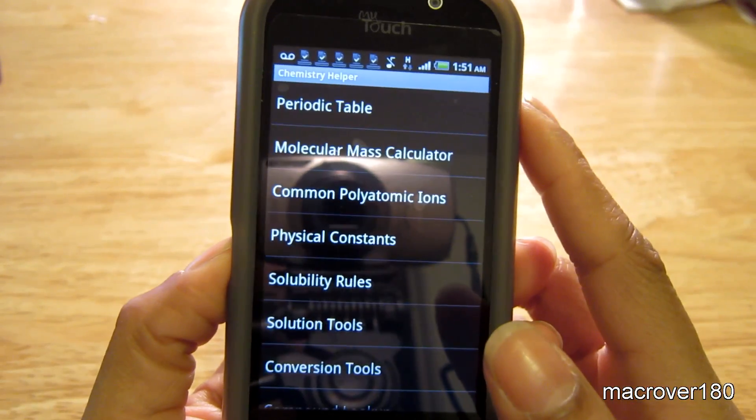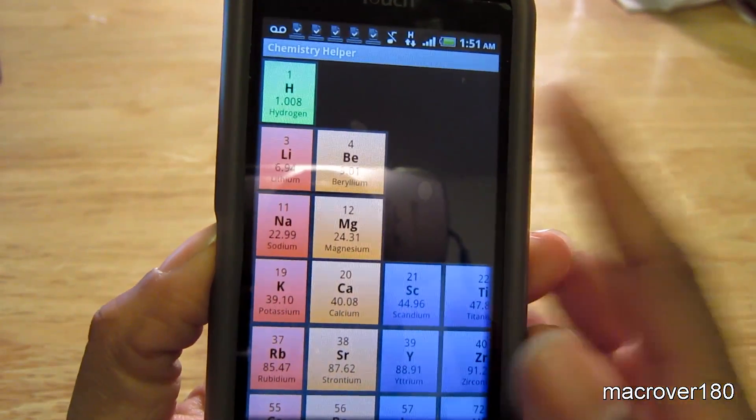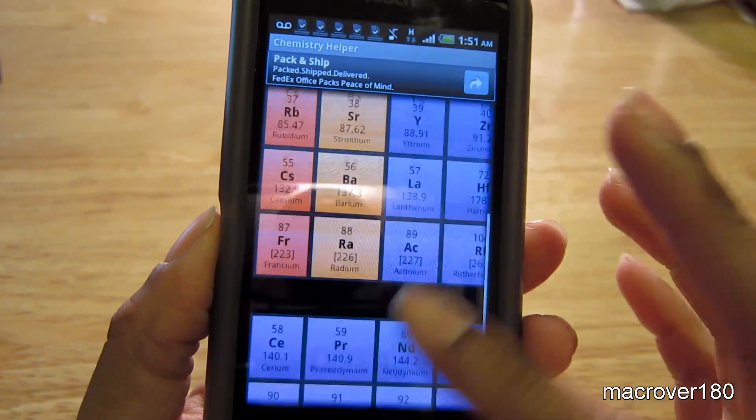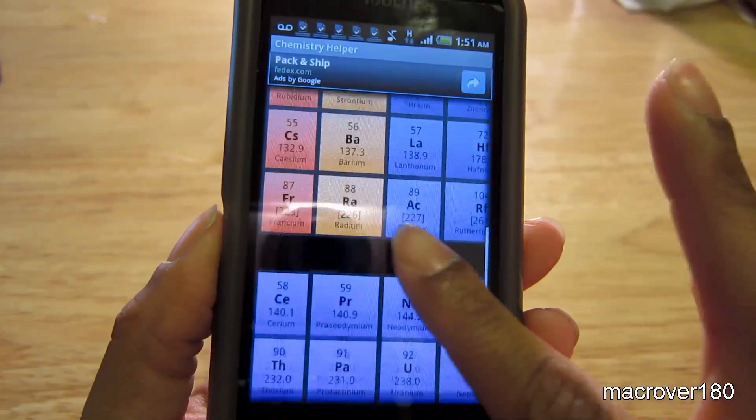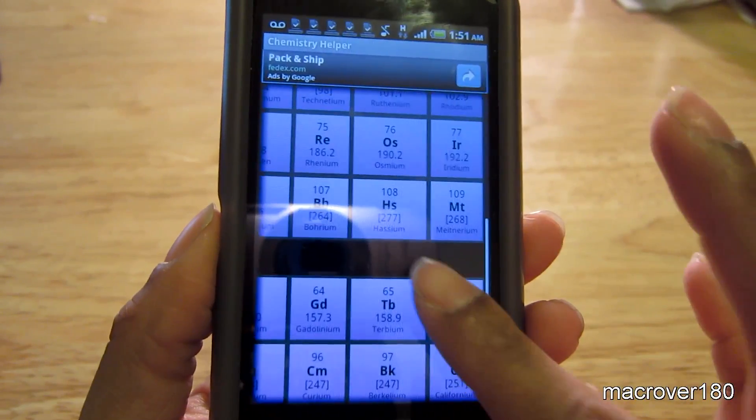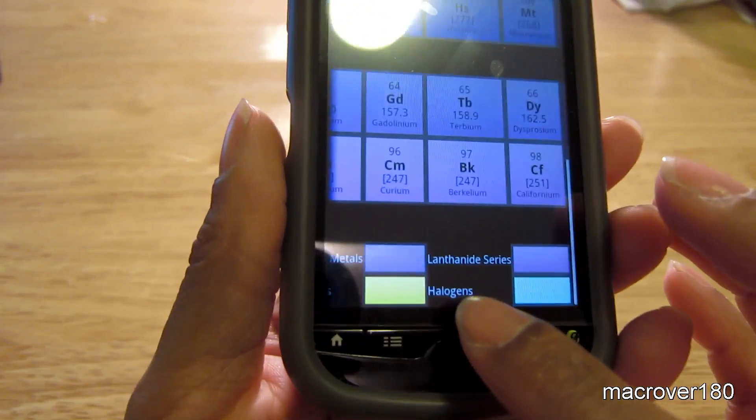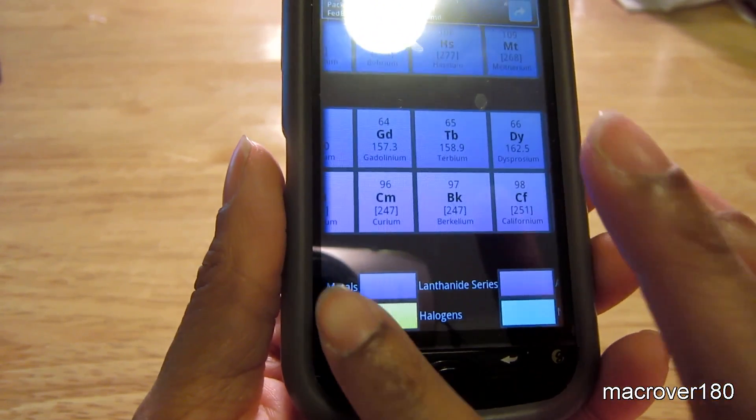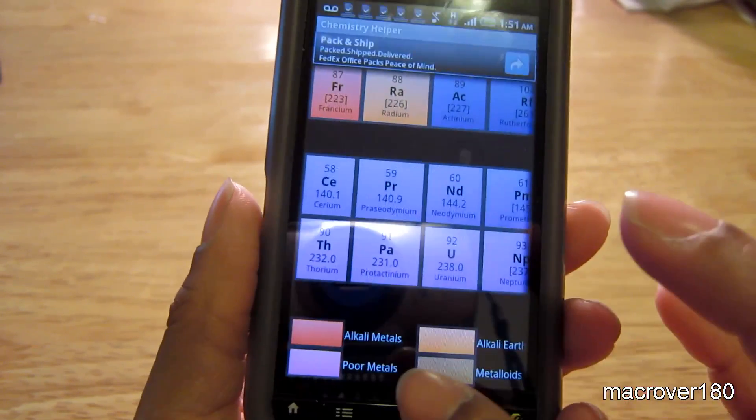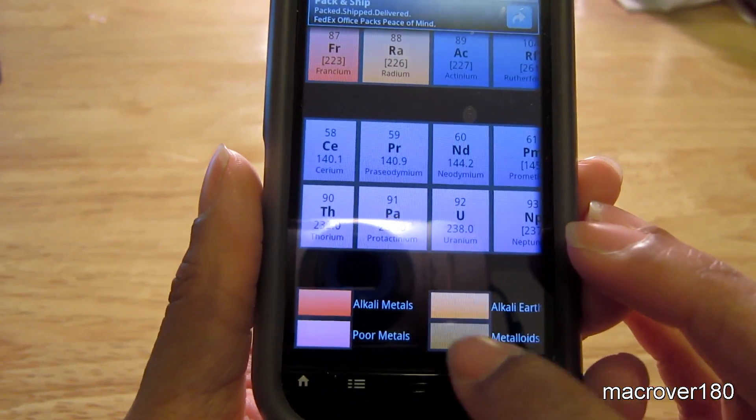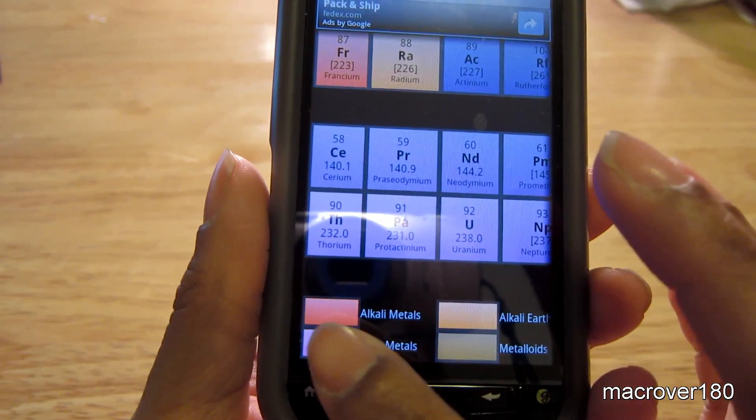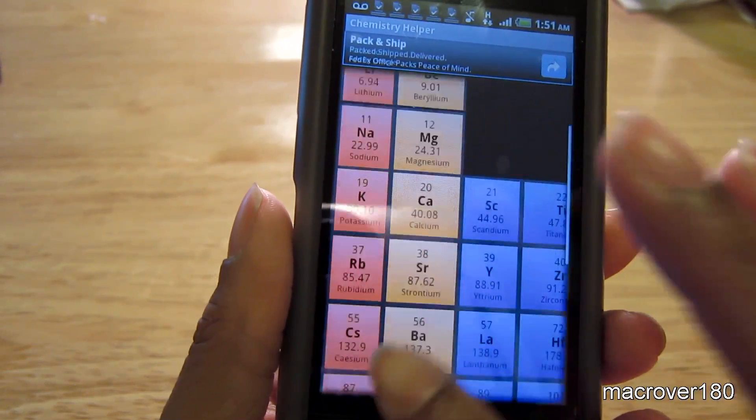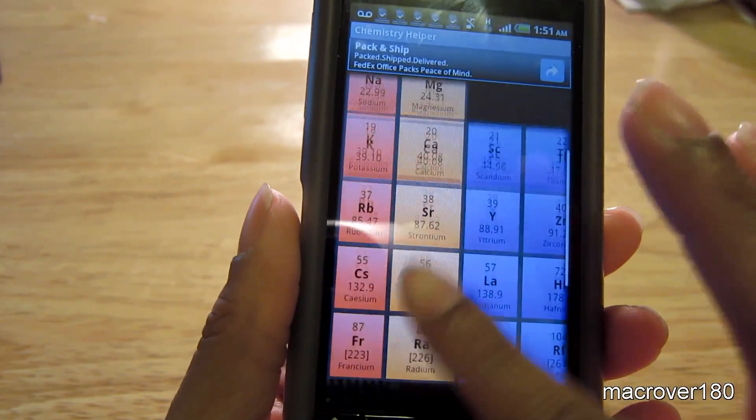So periodic table, you're greeted with the classic view of the periodic table. And if you'd like to find certain groups and identify them, the codes for each of the groups are found on the bottom here. So if you're looking for alkaline metals, just find the corresponding color and you'll have access to the group.